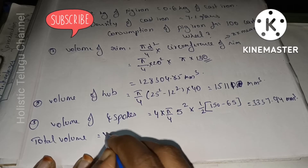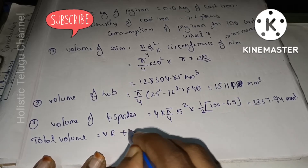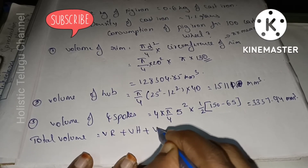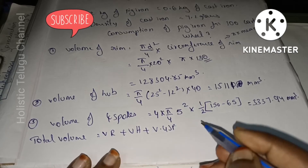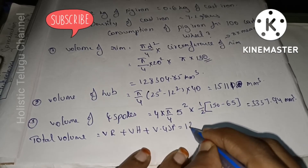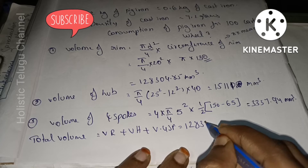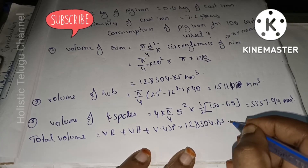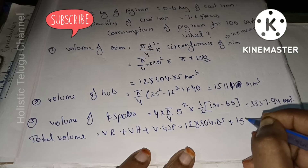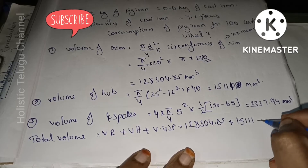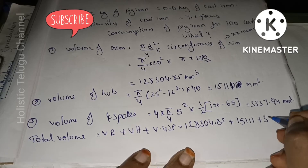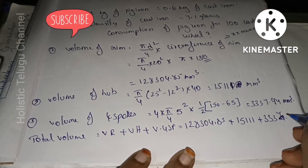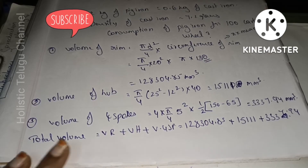Total volume = value of rim + value of hub + value of 4 spokes. That is: 128,304.5 + 1511 + 3337.4, giving a total volume of approximately 146,753.79 mm³.